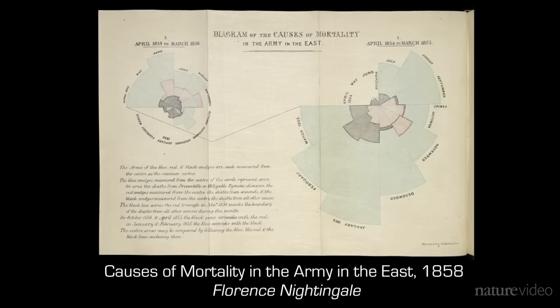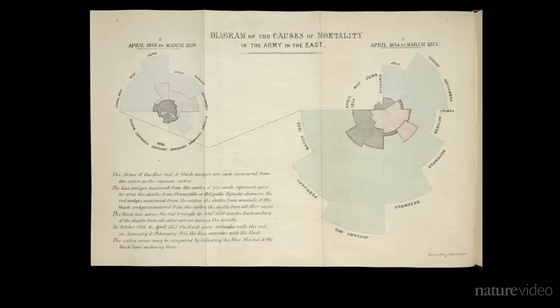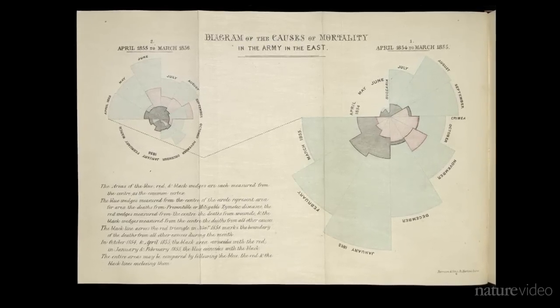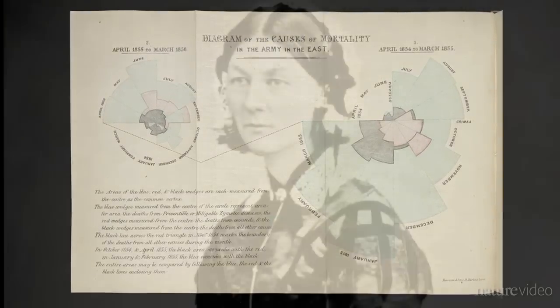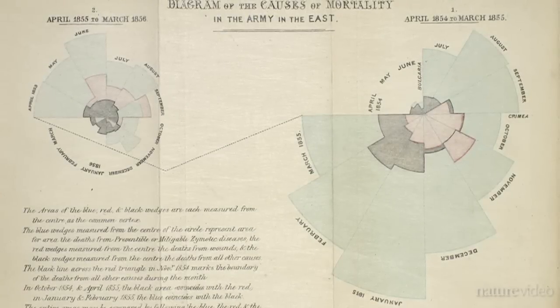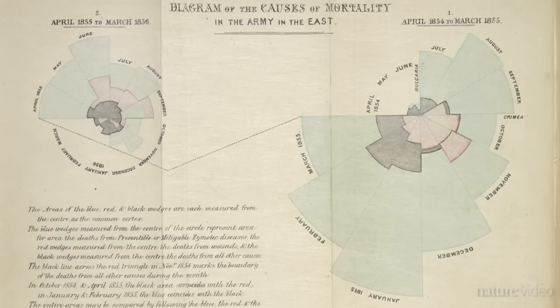This diagram here by Florence Nightingale is truly one of those diagrams that has actually changed the world — it's changed science, it's changed the way in which things were done. Many people think of Florence Nightingale as the lady with the lamp, but she was actually an incredibly eminent statistician in her own right.